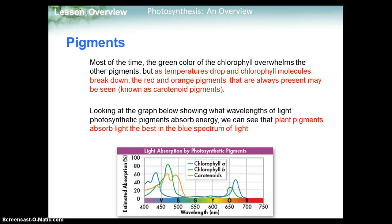Most of the time, the green color of chlorophyll overwhelms the other pigments. But as temperatures drop in the fall, chlorophyll molecules break down, and red and orange pigments that are always present start to show. These are called carotenoid pigments — things like carrots are kind of orange. Looking at the graph, plant pigments absorb light the best in the blue spectrum of light.